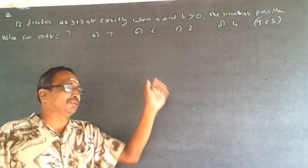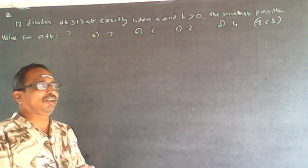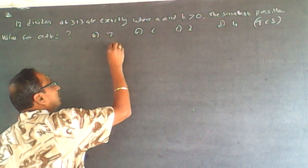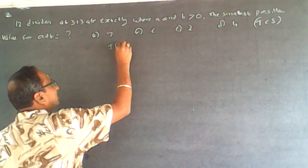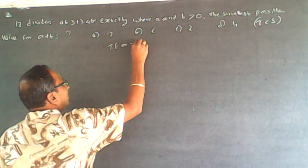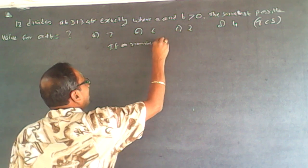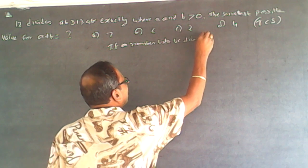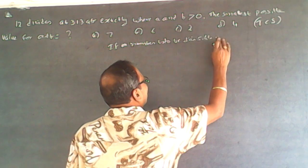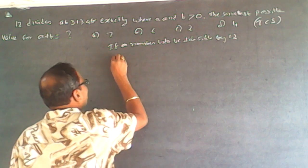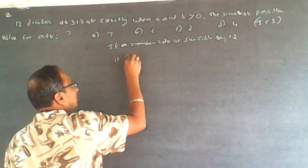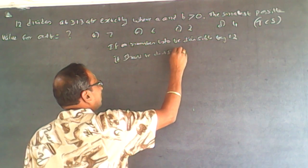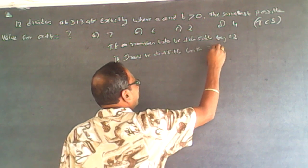It's a simple question. Let's know the rules of divisibility. If a number is divisible by 12, it should be divisible by both 3 and 4.